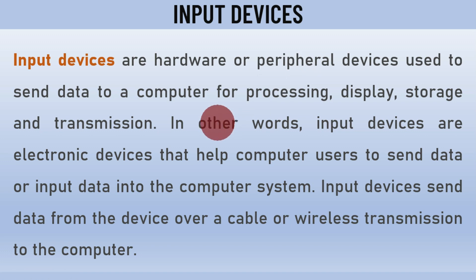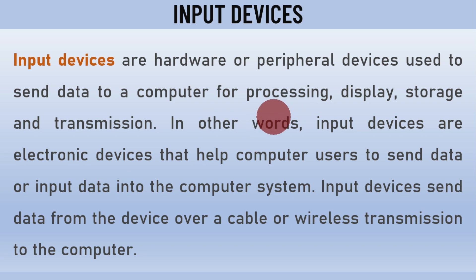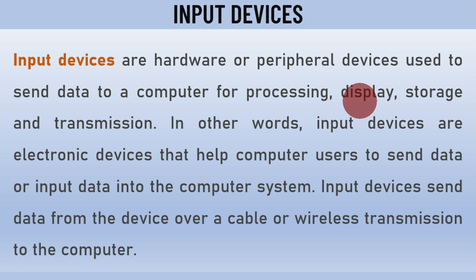Input devices are also peripheral devices — they are external devices connected to the computer system to offer help by transferring data into it. When data is inputted, it needs to be processed by the central processing unit, which is known as the CPU. After processing, it is displayed on the monitor screen. The outcome of processed data is called information, and it can be stored in a storage medium such as a hard drive, flash drive, or compact disc.